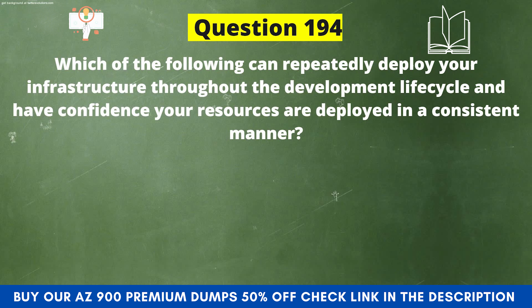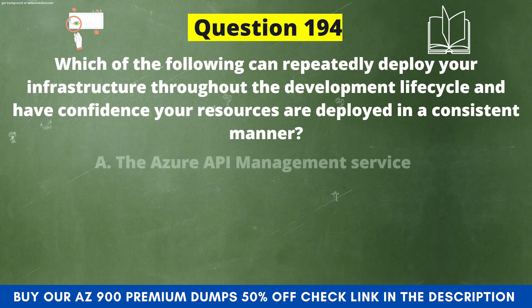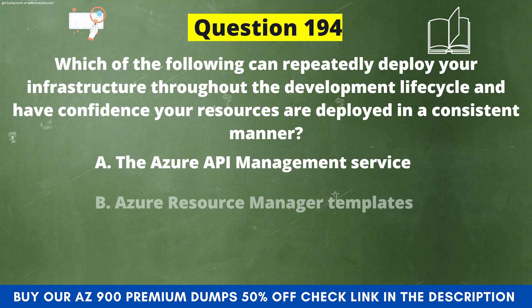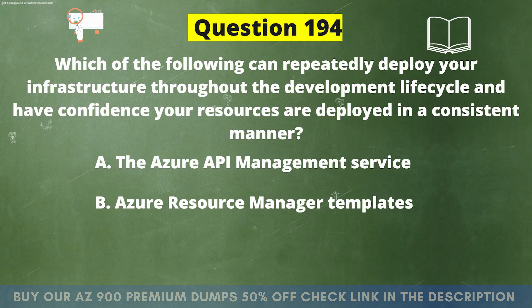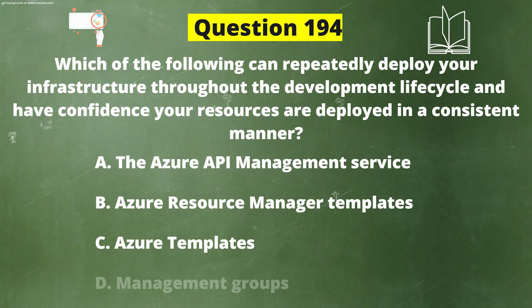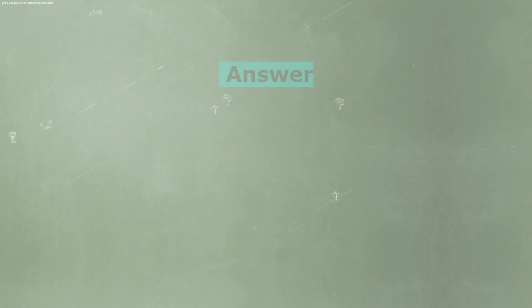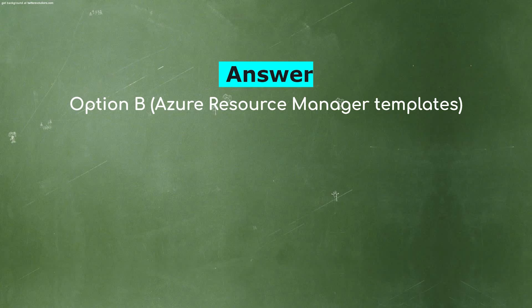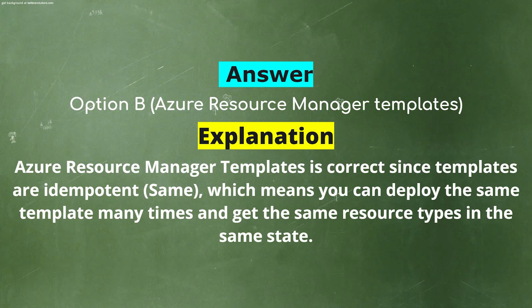Next question: Which of the following can repeatedly deploy your infrastructure throughout the development lifecycle and have confidence your resources are deployed in a consistent manner? The options are: A) The Azure API Management Service, B) Azure Resource Manager Templates, C) Azure Templates, D) Management Groups. The correct answer is option B: Azure Resource Manager Templates. Explanation: Azure Resource Manager Templates are idempotent, meaning you can deploy the same template many times and get the same resource types in the same state.